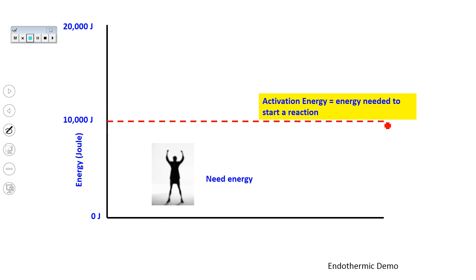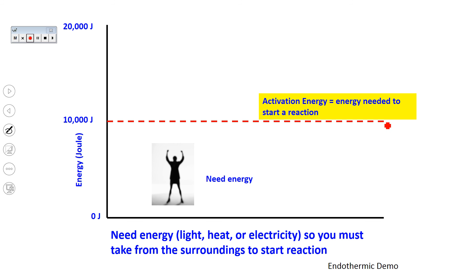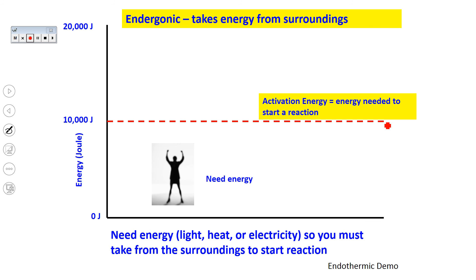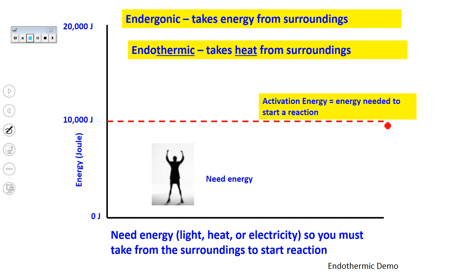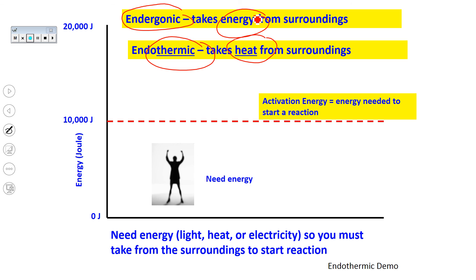For reactions that are below this line — the ones that need energy — that energy can be in the form of light, heat, or electricity taken from your surroundings. Those are called endergonic reactions. They take energy from the surroundings in order to reach that activation energy. If that energy is specifically in the form of heat, it gets labeled endothermic, where 'thermic' means heat from the surroundings. So endergonic is a general term for any type of energy from the surroundings; if that energy is specifically heat, it is called an endothermic reaction.